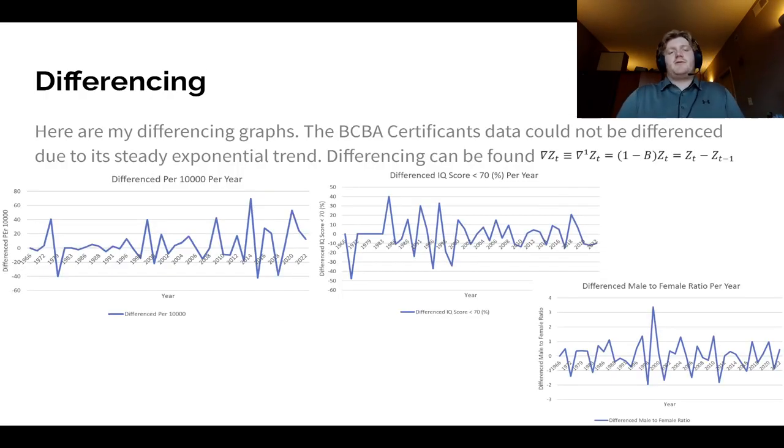So here is the three graphs after the differencing. And yet again, the BCBA certificate's data cannot be differenced. And there is also the differencing equation as well. And that is just taking the current data point and subtracting it by the previous one. And that will equal the current on the differencing.